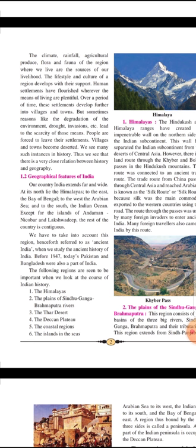These are the necessities — after that only we will wear nice clothes and celebrate festivals. First comes food and basic necessities. Human settlements have flourished wherever the means of living are plentiful. Where you will be getting means of living — food, clothing, shelter, climate, everything — if this is in plenty, you will get settlements there. Settlements like a society. Over a period of time, these settlements develop further into villages and towns. See, in Belapur, first it was Belapur Gav, now it's CBD Belapur.